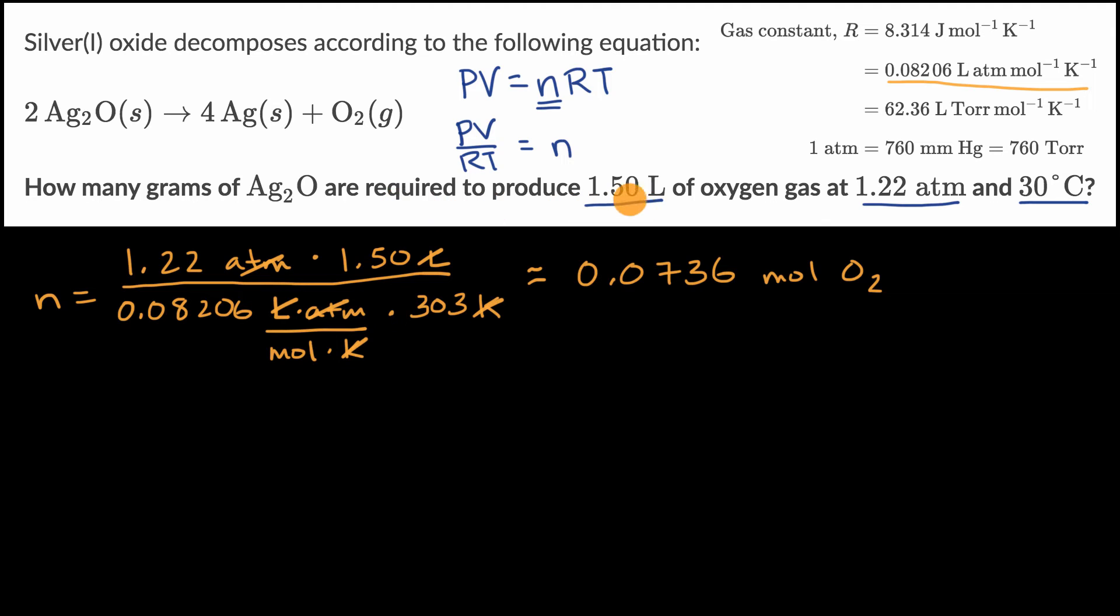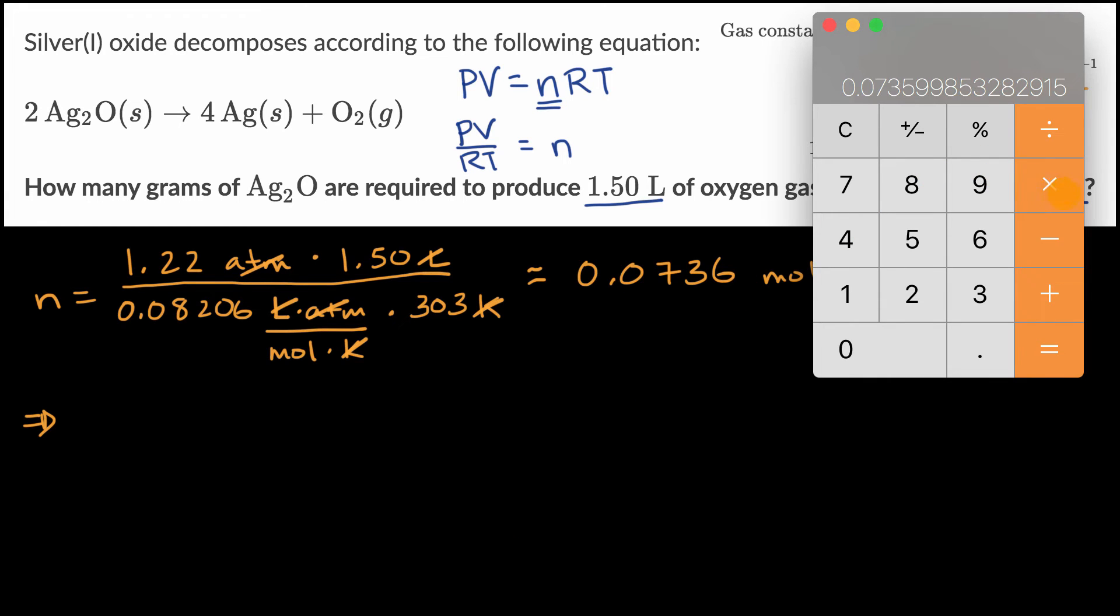We need two times this number of moles of silver oxide, because for every one mole of molecular oxygen we produce, we need twice as many moles of silver oxide.